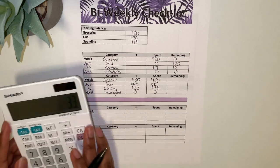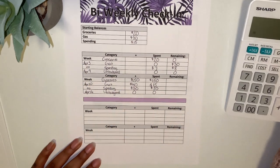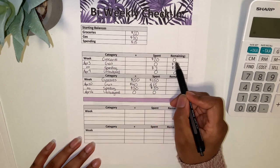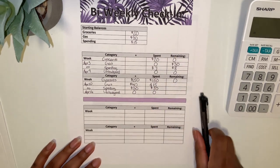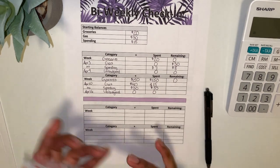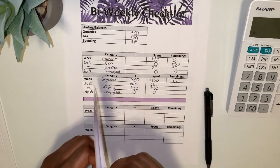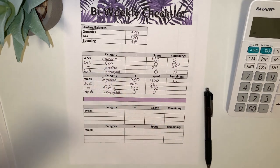So now let's see where we land. Groceries had $150, spent $150, so that should be zero. And then this is my grocery envelope and it's completely empty, so that's good.